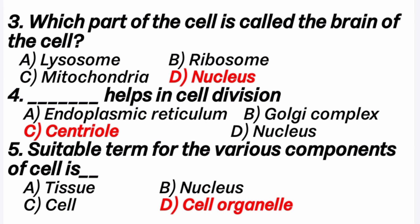Fifth question: the suitable term for the various components of a cell is dash. Answer is option D — cell organelles. There are different types of cell organelles: ribosomes, Golgi bodies, and endoplasmic reticulum. These are found in the cytoplasm of the cell.